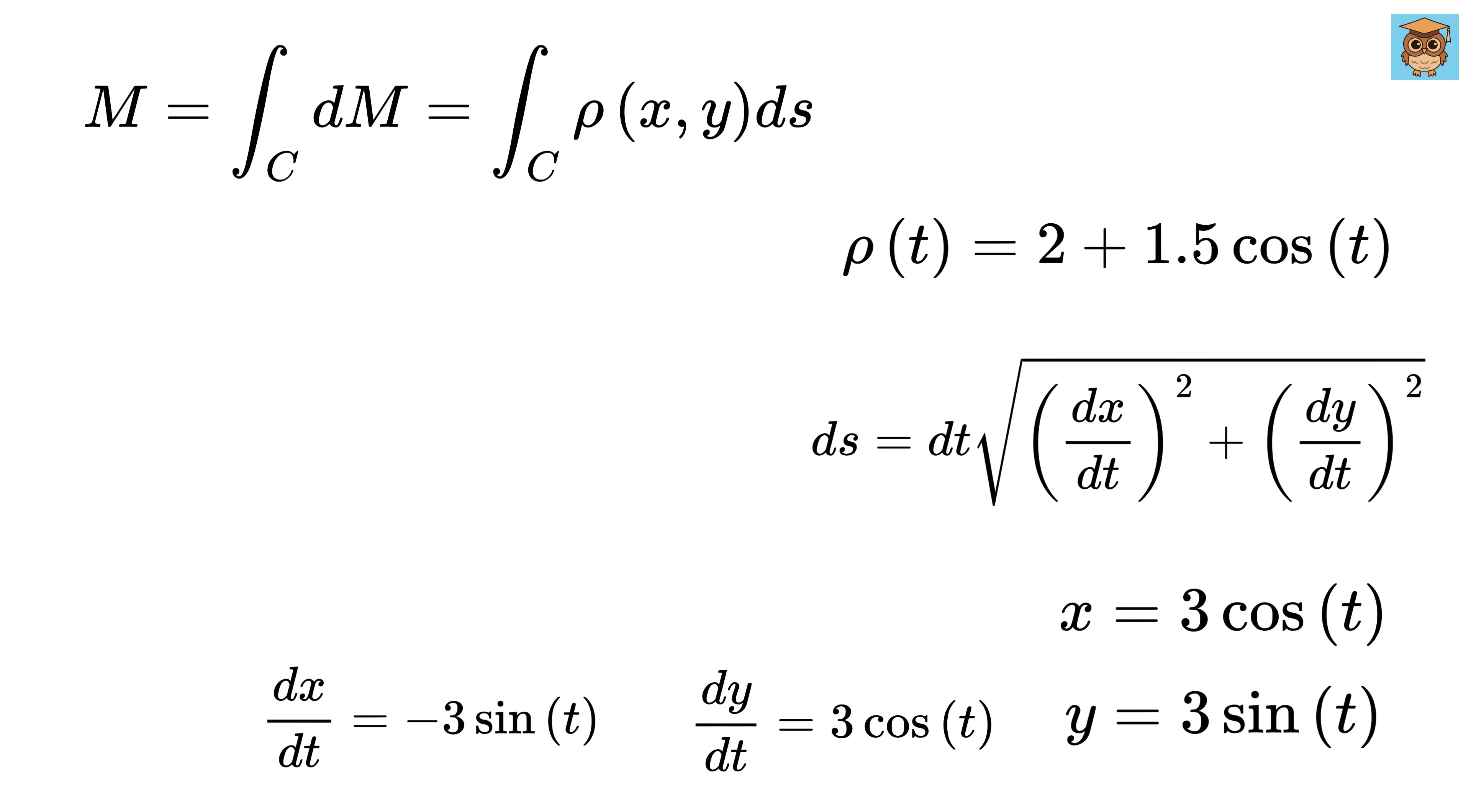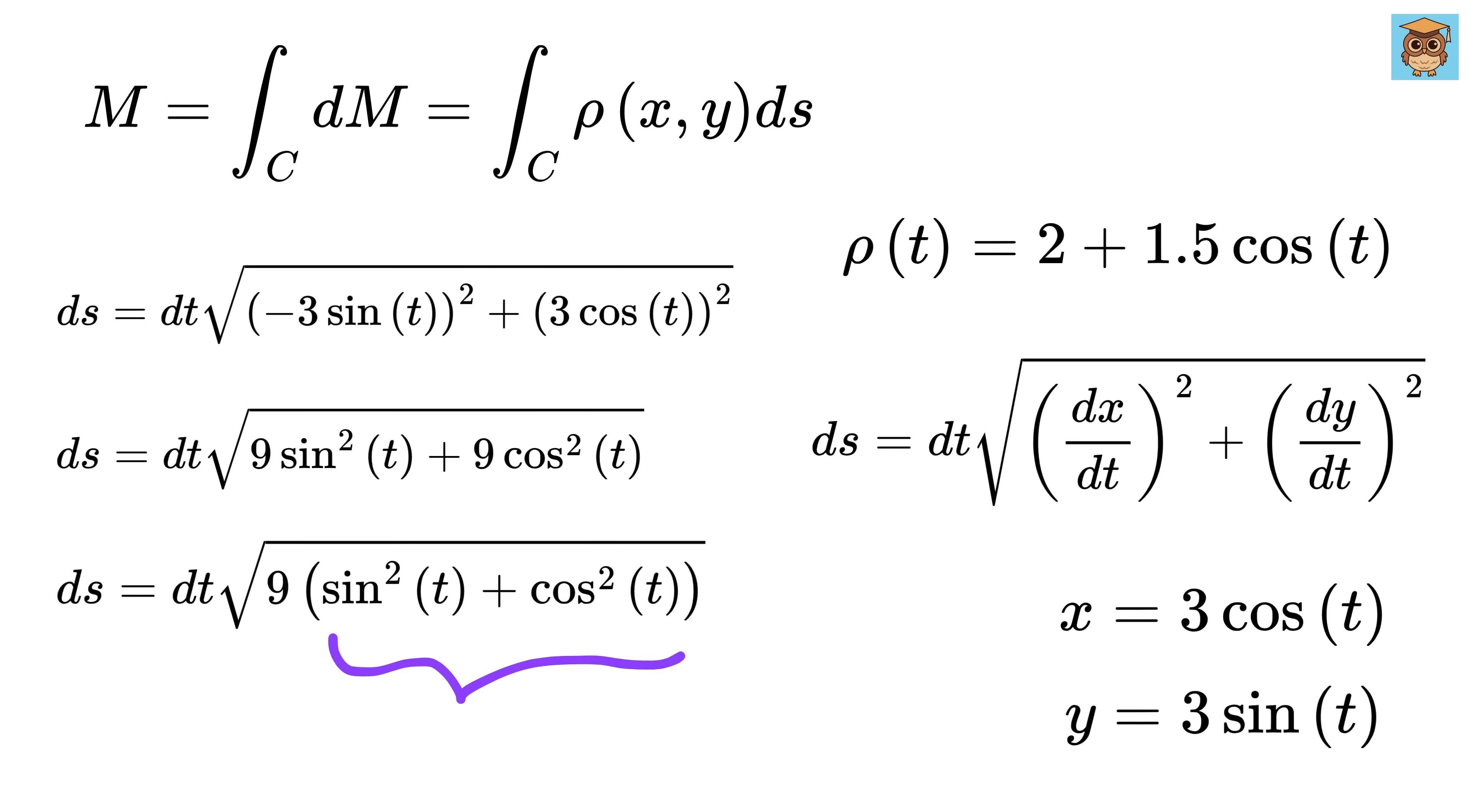Now, let's substitute these into our equation for ds. Substituting the values, we get this, which on expanding becomes this. Now, we know from the trigonometric identity that sine squared of t plus cos squared of t is always equal to 1. So replacing that in our expression, we get the square root of 9 times 1, which simplifies to 3. So ds is just 3 times dt.